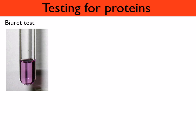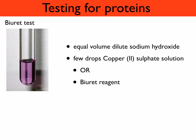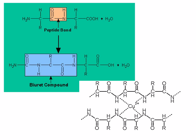So how do we test for proteins? It's called the Biuret test. You add equal volumes of dilute sodium hydroxide and then a few drops of copper sulfate solution — the Biuret reagent. This reacts to form a purple colour if a protein is present. The copper ions in the Biuret reagent associate with four nitrogen atoms in the peptide bonds, forming a complex that makes the solution look purple. The more peptide bonds there are, the more intense the colour will be.